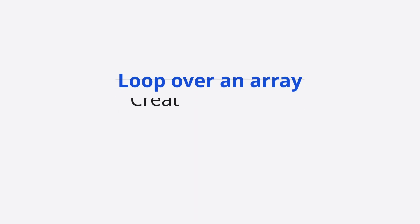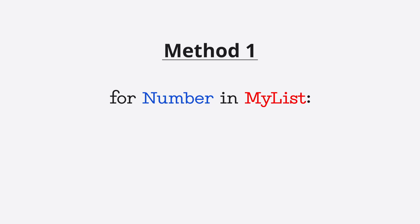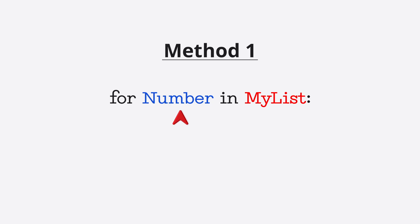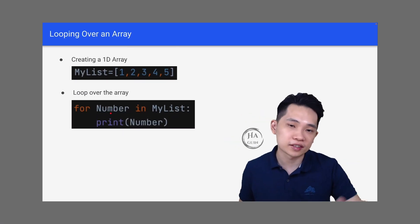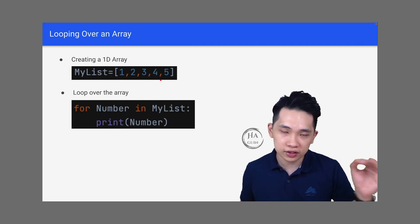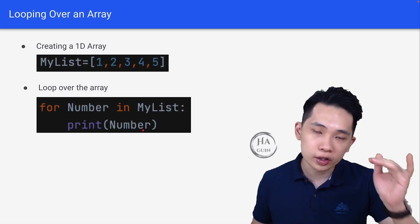The last topic is how to loop over an array. First, create a 1D array: my_list = [1, 2, 3, 4, 5]. We have two methods to loop over the array. Method 1: for number in my_list — this iterates through every element inside the list. The variable 'number' can be named anything such as i, j, etc. Then print(number). This loops through elements 1, 2, 3, 4, 5.